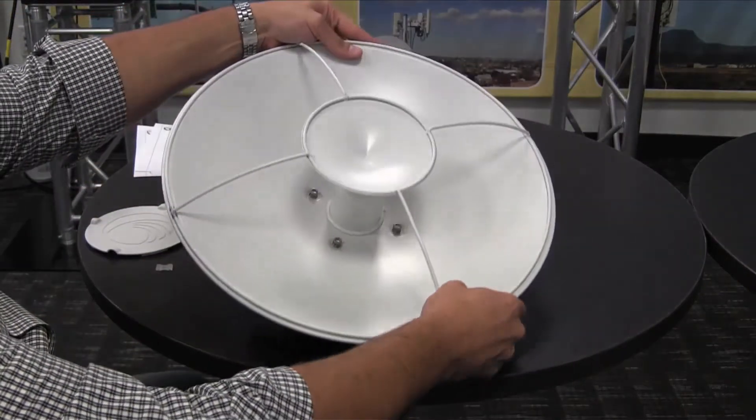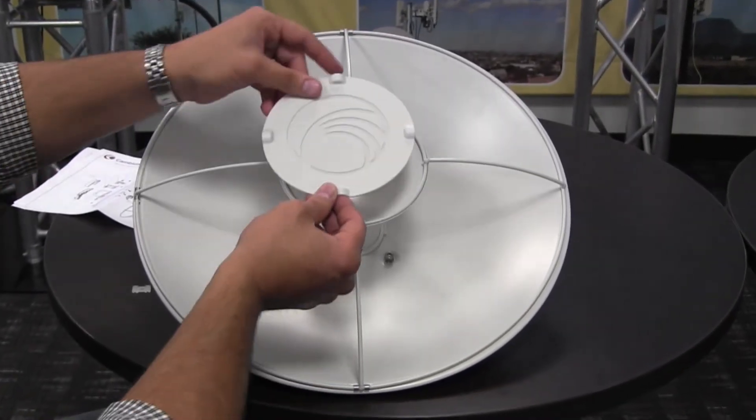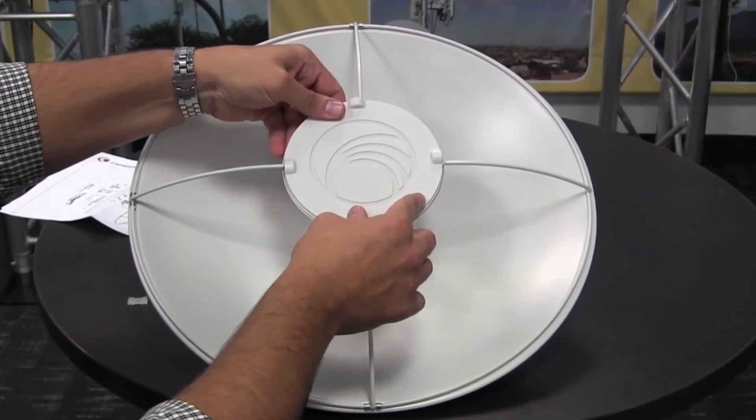Flip the dish over again to attach the medallion. Attach the medallion to the sub-assembly by placing it on there and firmly pressing down.